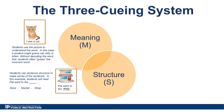Another example of structure is using predictable pattern text that is easy to recite for students but often leads to students memorizing the pattern and not reading the words. Predictable text often sounds like this: I see a fish, I see a cat, I see a house, I see a farm.